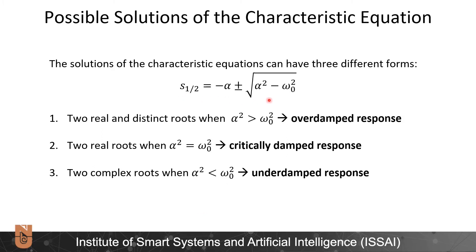Depending on the values of alpha and omega zero, we might have three different responses and three different solution types for S1 and S2. We can have two real and distinct roots when alpha squared is greater than omega zero squared — this is the over-damped response. We can have two real overlapping roots — this is the critically damped response. And we can have two complex roots when alpha squared is less than omega zero squared — this is the under-damped response with oscillations.